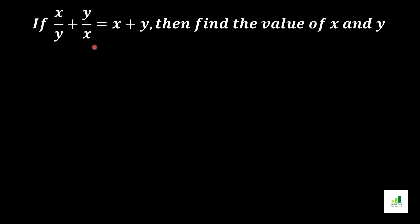In order to find the value, we will first take LCM from the left side of the equation, which will give us x squared plus y squared over xy. So the left side converts to (x² + y²)/xy, and x plus y remains the same on the right side.